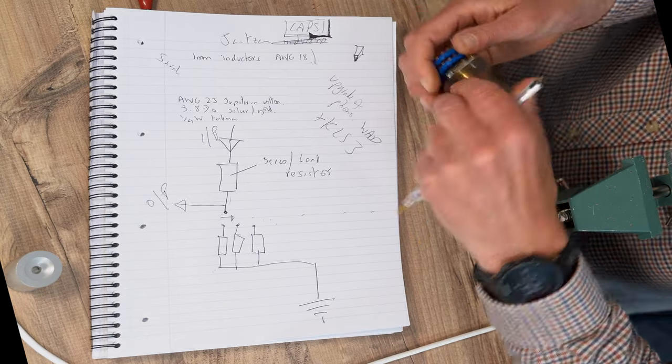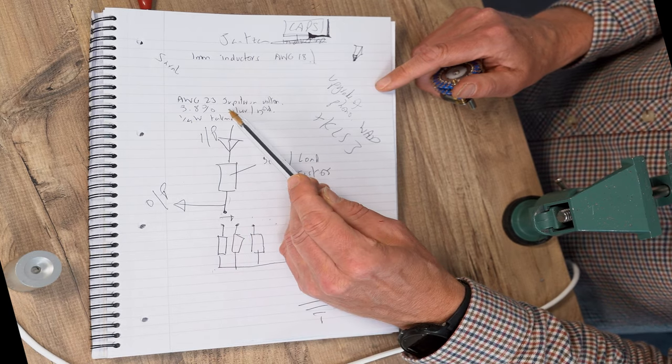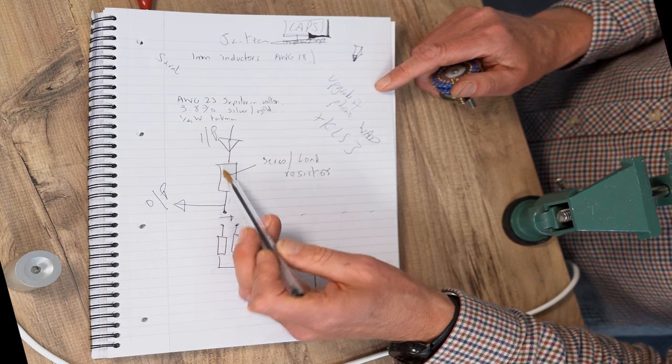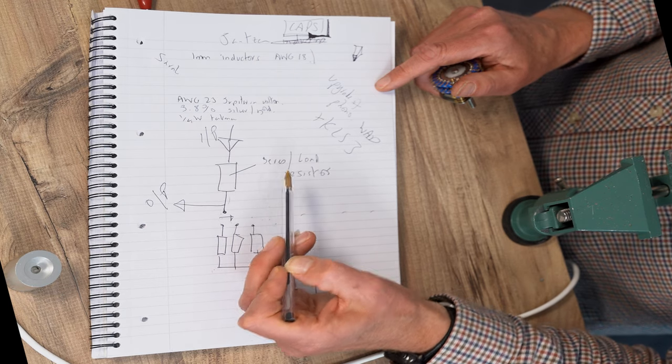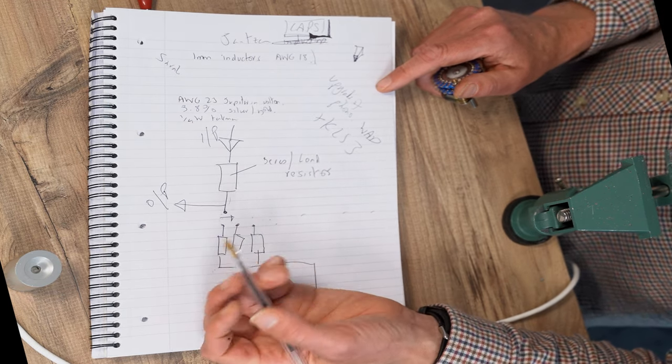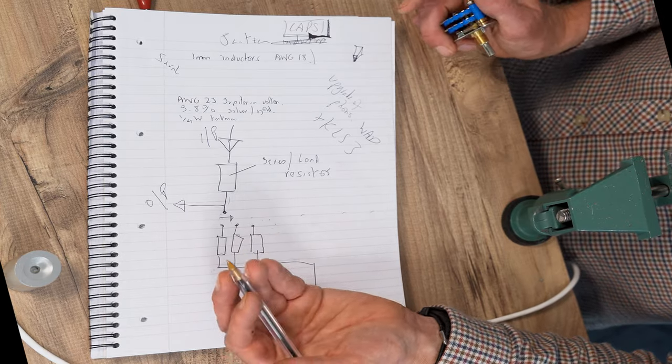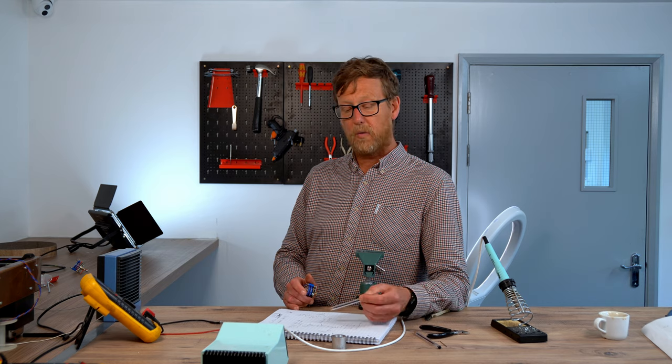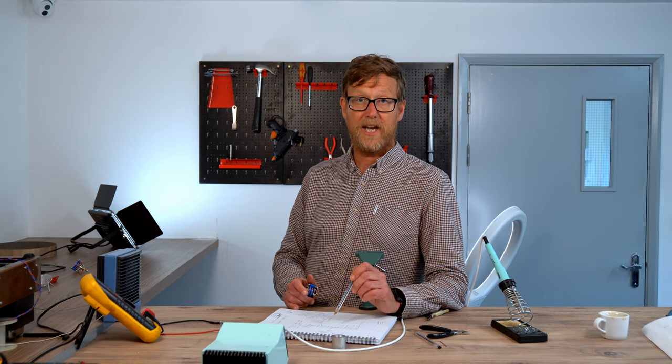So just to go through, you have your signal input comes through the top and then it hits the series load resistor here. So this would be 10k, 20k, 50k, 100k, 250k. Depends on what, say if you're replacing 100k Alps, you will use 100k resistor.